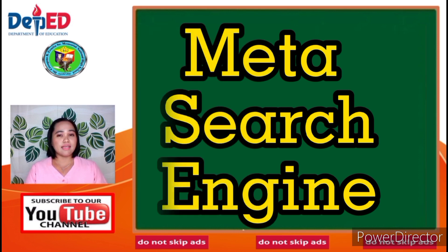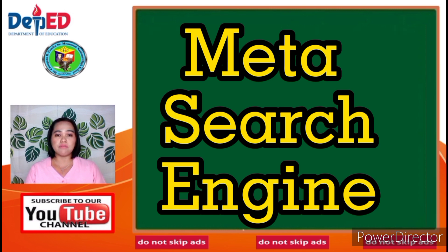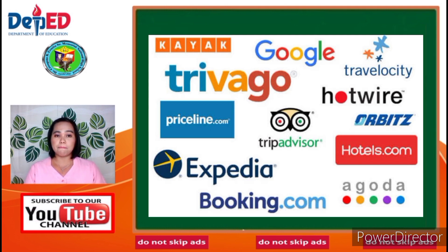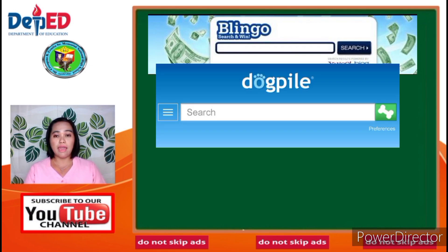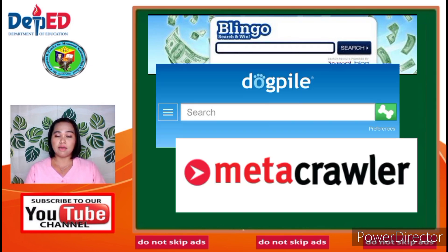A meta search engine, on the other hand, works by actually using other search engines to find the needed information. It works the same way as when you use a website to help find the best reviews on a particular product or sale, or flight booking for your trip. Popular examples of this type include Blingo, Dogpile, and Meta Crawler.